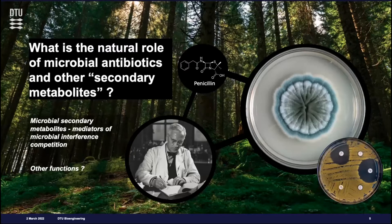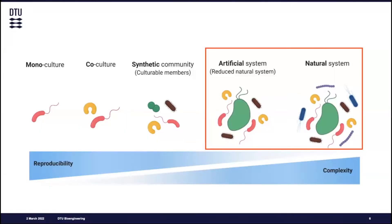At the Center, our overall aim is to unravel the natural role of microbial secondary metabolites. Since Alexander Fleming discovered penicillin from an agar plate, the main perception has been that these secondary metabolites are mediators of microbial interference competition and they are antibiotic. But what we still don't know is what the true roles in nature are, and whether they have other functions besides being antibiotic. In order to study this, we have learned from mono and co-cultures and simple experimental setups where we have gotten some mechanistic insights, but if we want to know what is actually happening in the real world, we need to move away from these simple systems to capture the complexity found in nature.